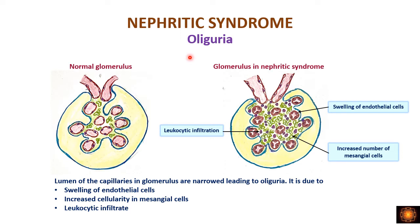Why do these patients have oliguria? In a normal glomerulus we have capillaries and the mesangium with mesangial cells. In the nephritic syndrome, damage to the endothelial cells causes them to swell up, reducing the lumen. Along with that, proliferation of mesangial cells occurs due to growth factors and cytokines released by inflammatory cells. There is also leukocyte infiltration. As the mesangial matrix increases, the vessels get compressed, and the lumen further decreases because of endothelial cell swelling — causing decreased blood flow into the capillaries.